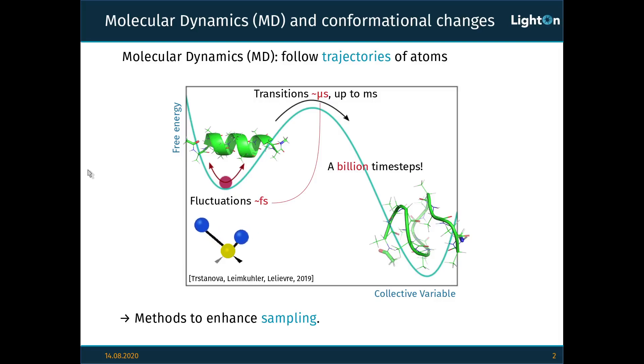First, let me introduce some molecular dynamics background. The goal of molecular dynamics is to study the behavior and characteristics of molecules by following the trajectories of their atoms. However, because atoms are constantly fluctuating and these fluctuations occur on the scale of femtoseconds, that is 10 to the minus 15 seconds, we need to take time steps of 10 to the minus 15 seconds to observe our molecules.